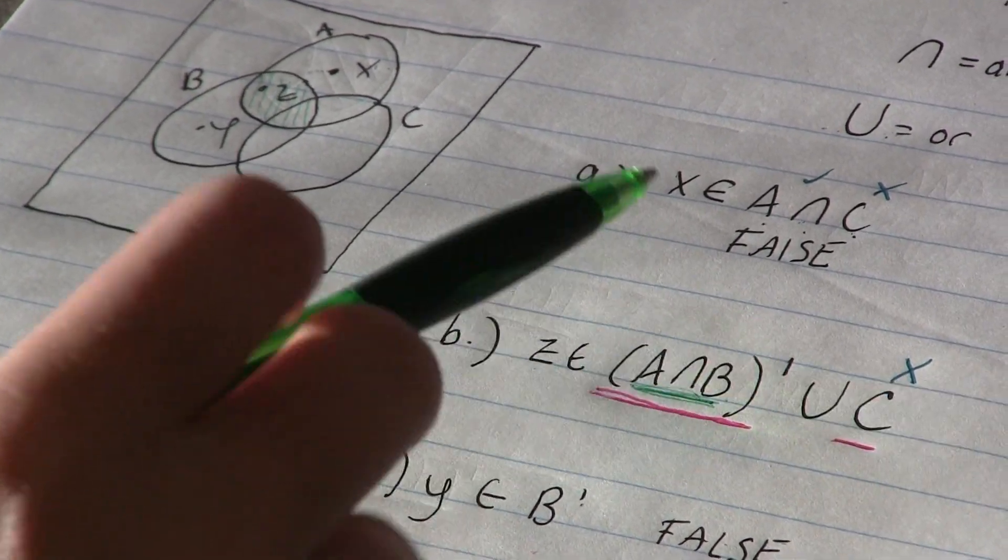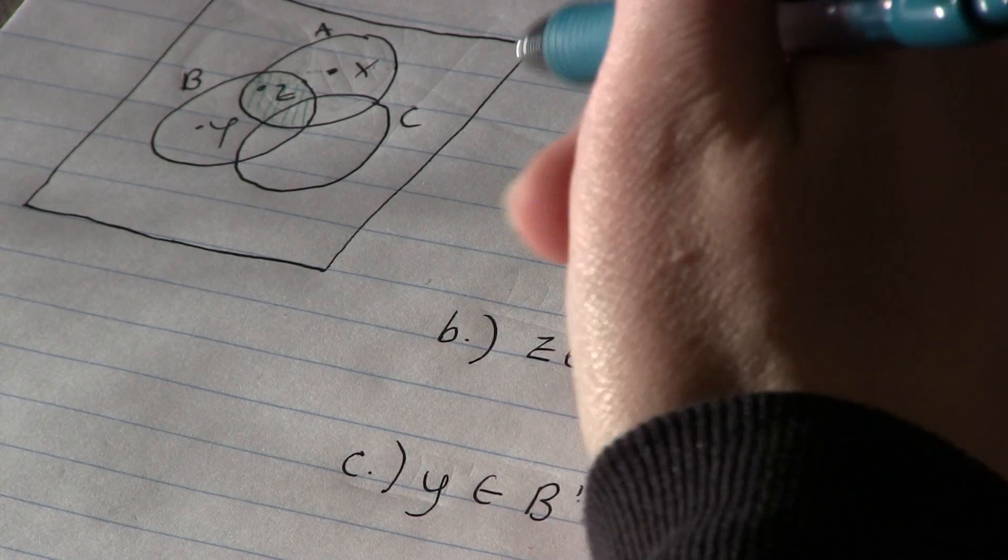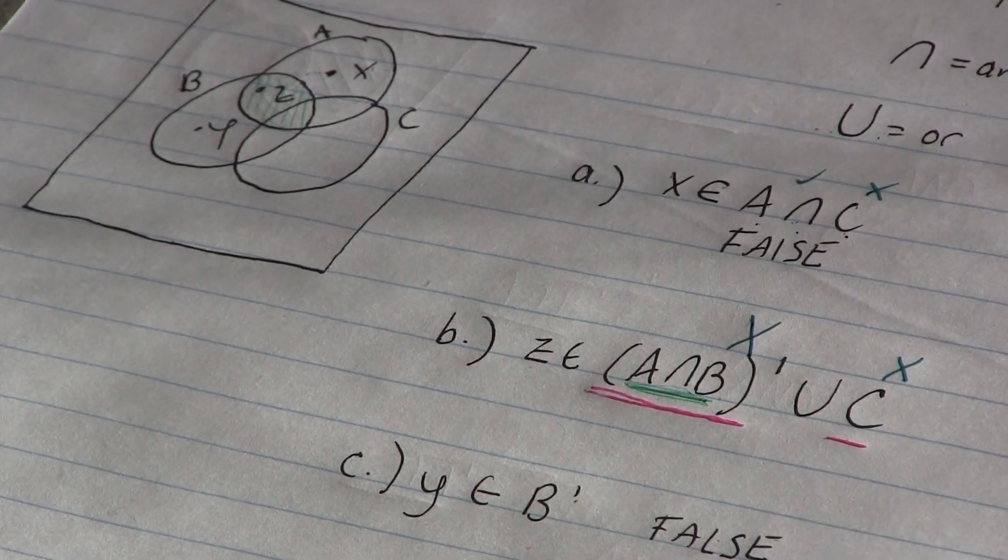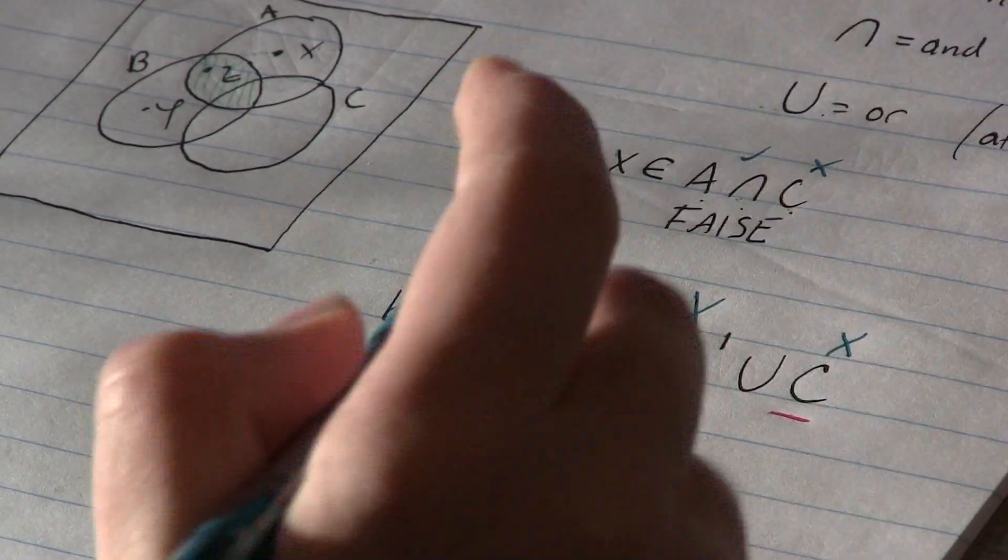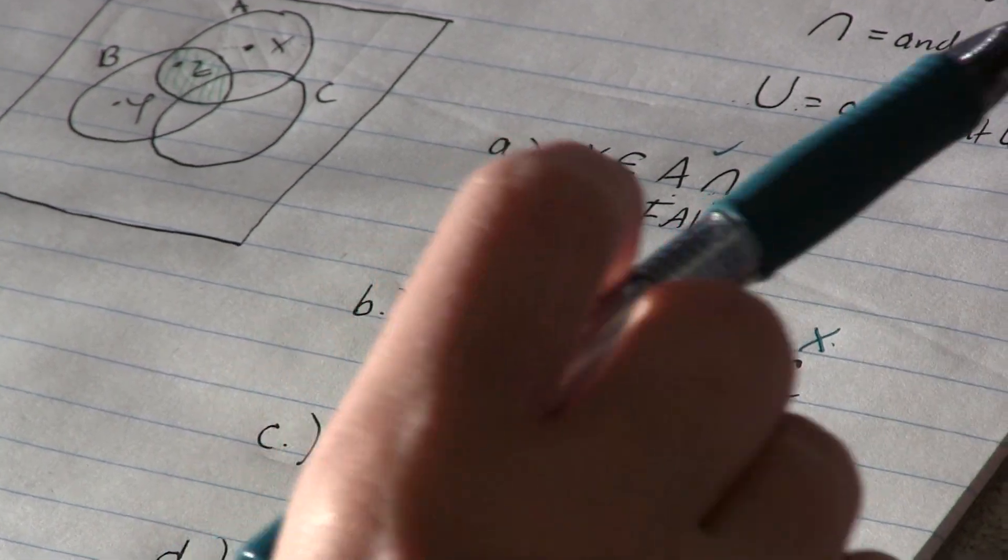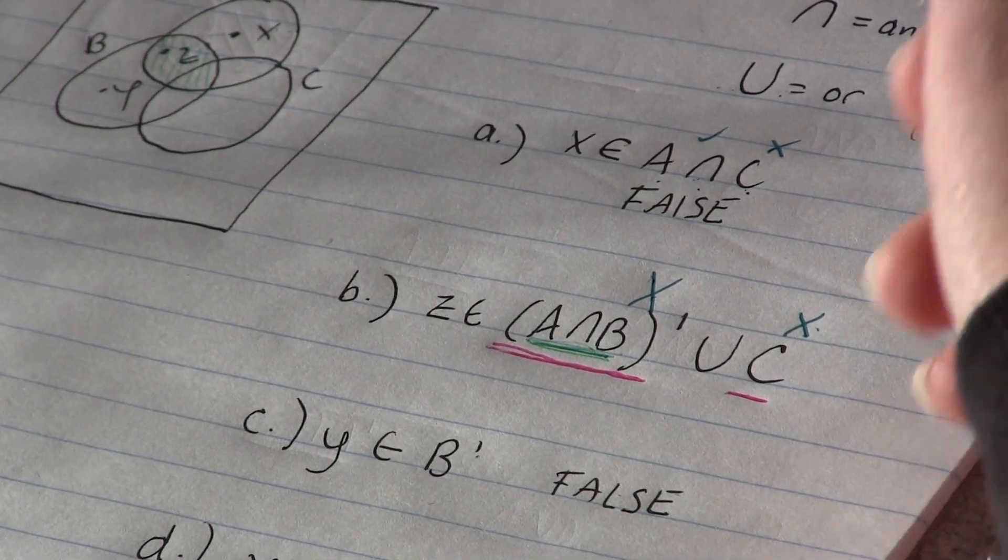Well, Z lives in here. So it can't live in the complement. Okay. So Z also isn't in this region. Z doesn't satisfy either thing on either side. So this one is also false.